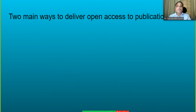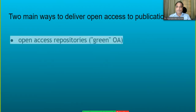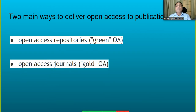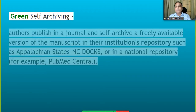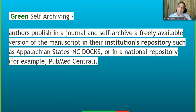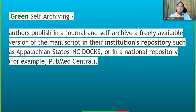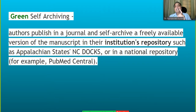There are two main ways to deliver open access to publication. First is Green — Green Open Access — also called open access repositories. Second is open access journals, which is called Gold Open Access. For Green self-archiving: the author publishes in a journal and also self-archives. You send your paper to a journal, they publish it, but you have permission to put this article in your university, institute, library, or website — in a directory or self-archive — freely available without any problem. It is called Green Open Access or Green self-archiving.